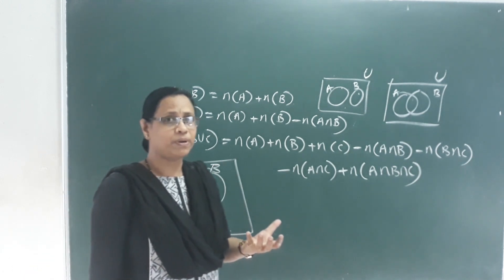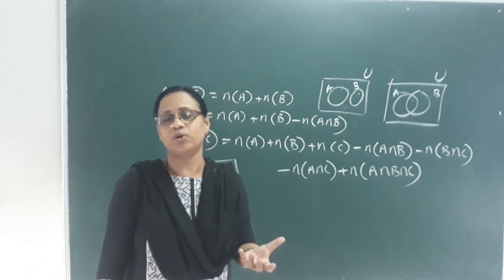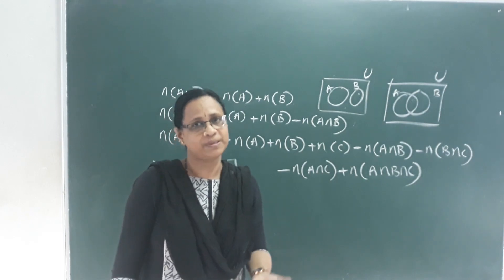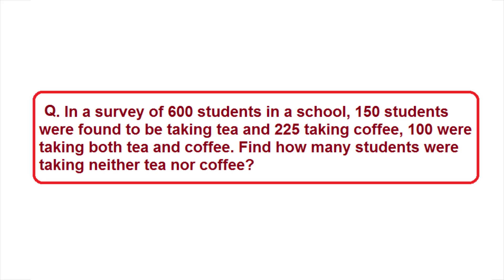These types of problems will appear in the exam. In a survey of 600 students in a school, 150 students were found to be taking tea and 225 taking coffee. 100 were taking both tea and coffee. Find how many students were taking neither tea nor coffee.